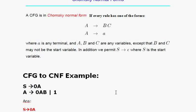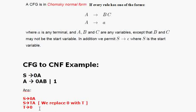To fix S → 0A, we replace the terminal 0 by introducing a new non-terminal T, defining T → 0. Our new rule then becomes S → TA, which is now in the form A → BC. The rule T → 0 is in the form A → a.